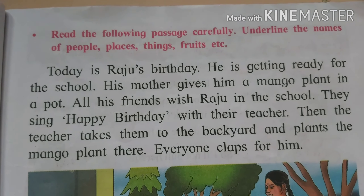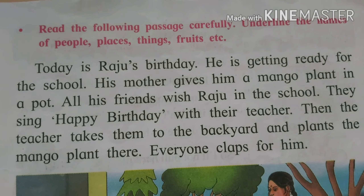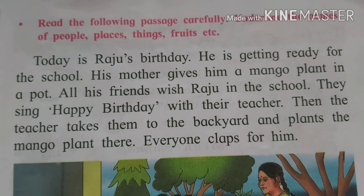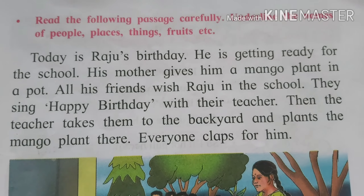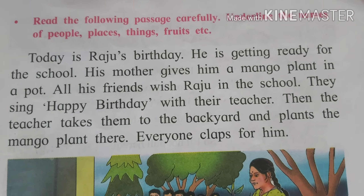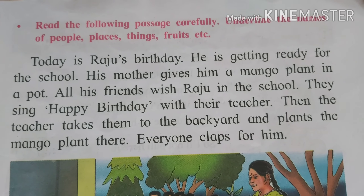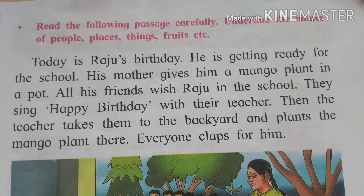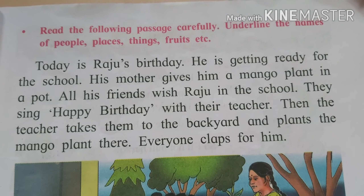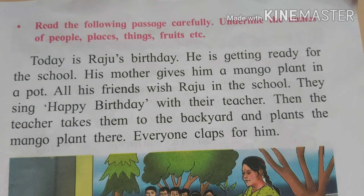Read the following passage carefully. Underline the names of people, places, things, fruits, etc. Today is Raju's birthday. He is getting ready for school. His mother gives him a mango plant in a pot. All his friends wish Raju in the school. They sing happy birthday with their teacher. Then the teacher takes them to the backyard and plants the mango plant there.